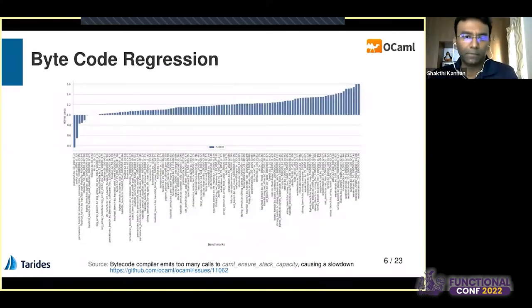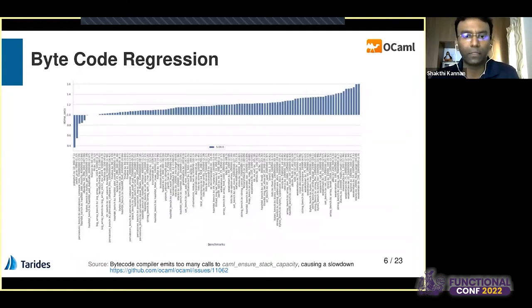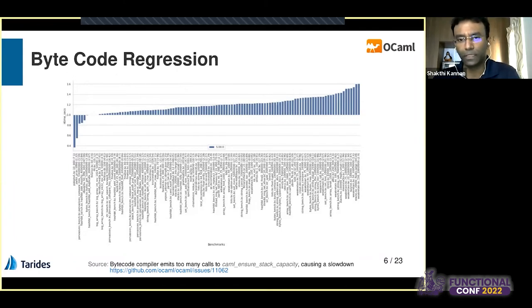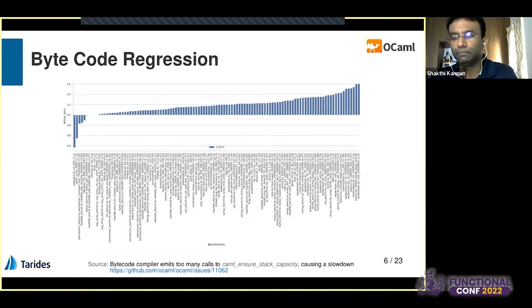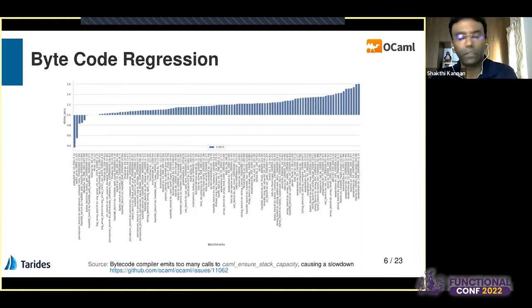We use Sandmark benchmarks to review OCaml PRs and changes that happen in the compiler itself. Here is an example of a bytecode regression we caught recently. Bytecode is the OCaml interpreter — basically the REPL where you key in OCaml code and see output immediately. There was a caml_ensure_stack_capacity function being called very frequently, and we were able to detect the slowdown in performance with Sandmark. This got fixed as well. It's quite useful for tracking down compiler PR performance regressions.